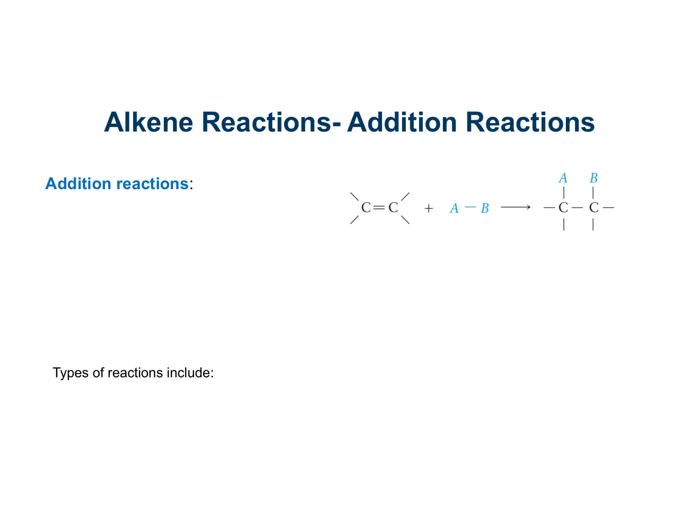In contrast to alkanes, which are inert to almost all chemical reagents, alkenes are quite reactive chemically. Since the only difference between an alkane and alkene is a double bond, it's not surprising to learn that most of the reactions of alkenes take place at the double bond. These reactions generally follow the pattern of addition reactions, where a compound adds to a double bond.